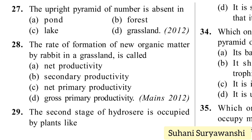The rate of formation of new organic matter by rabbit in a grassland is called what? Since rabbit is a consumer forming new organic matter, it will be secondary productivity. So option B is the right answer.